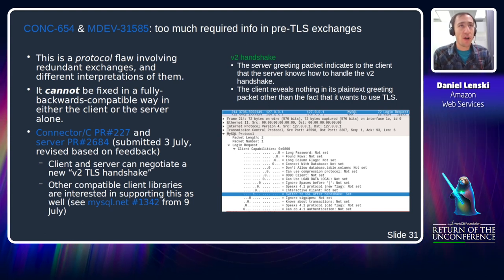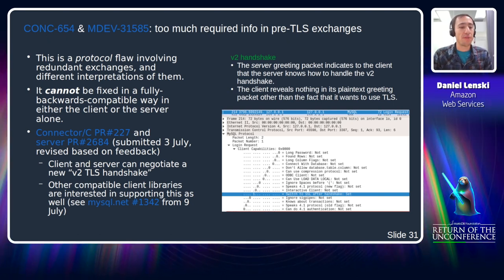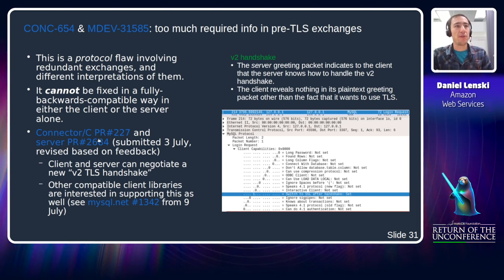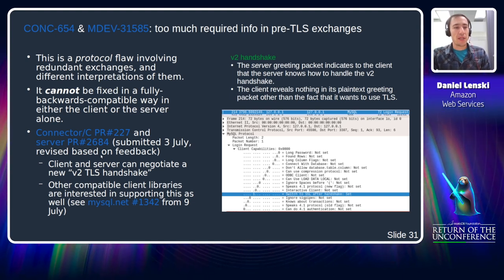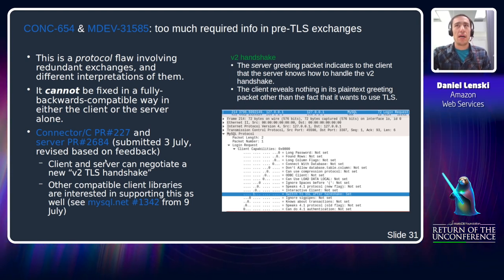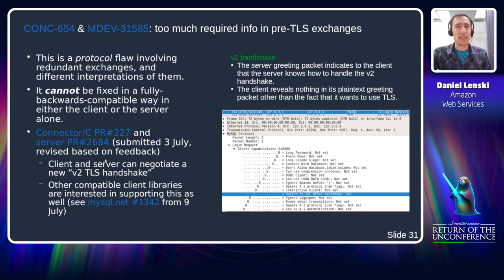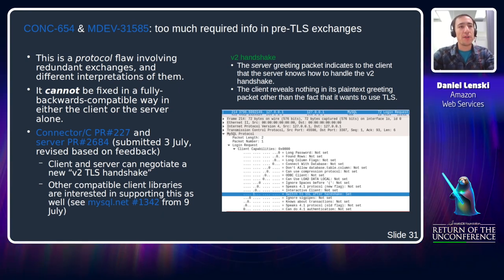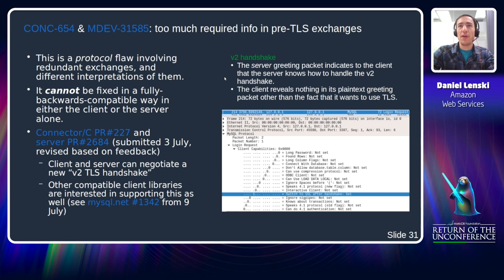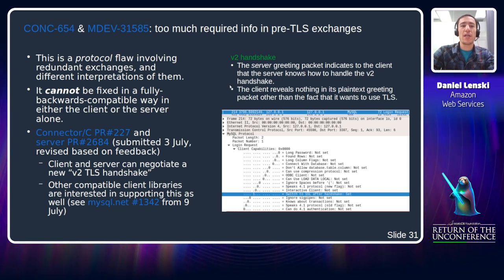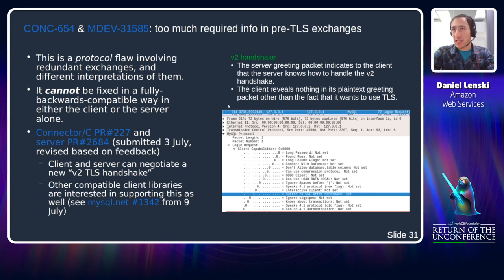This is a protocol flaw — it can't be fixed in a fully backwards-compatible way in either the client or server alone. It requires an evolution of the protocol. I have a couple of PRs submitted in early July for this, called MariaDB Handshake V2. If the server and client both support V2, the client will send a greeting packet that contains much less information — all it says is: yes, I can do TLS. Other compatible client libraries are also interested in supporting this.